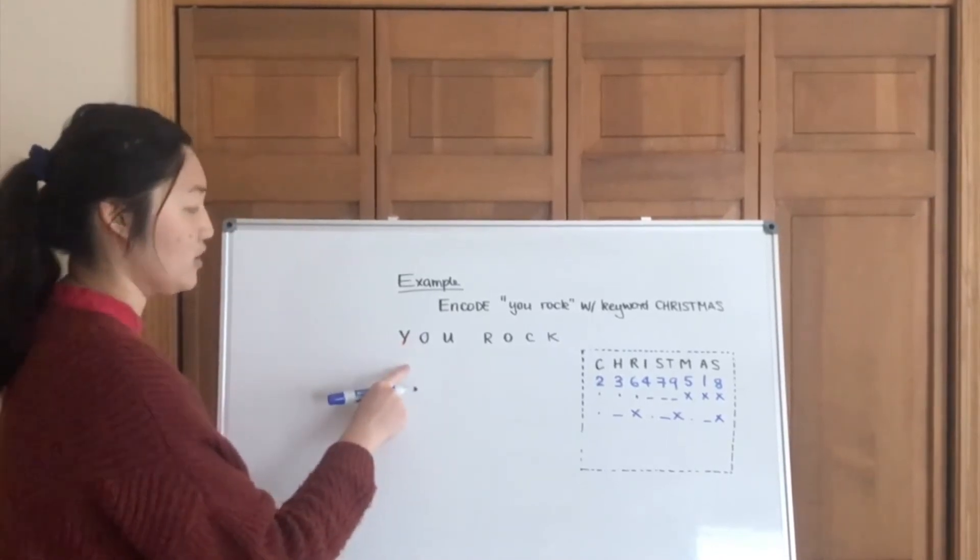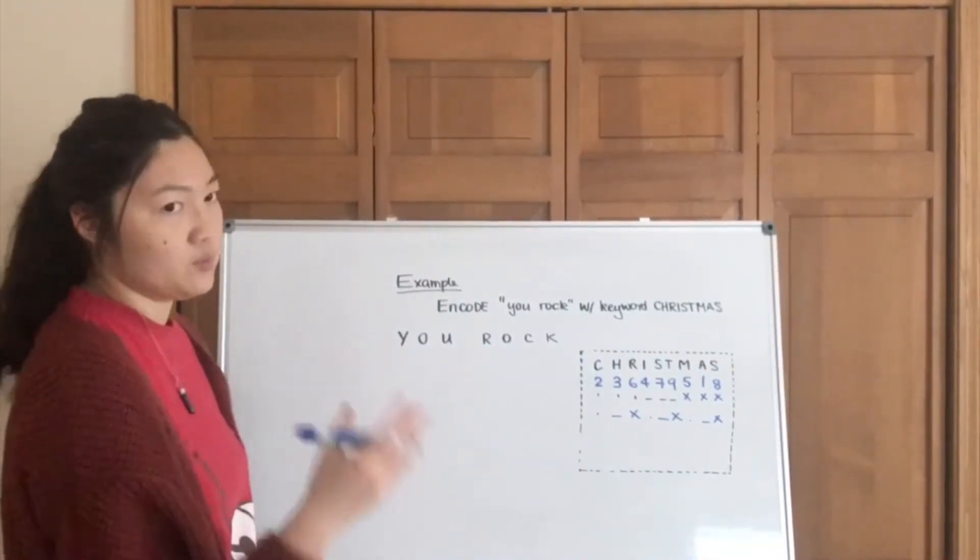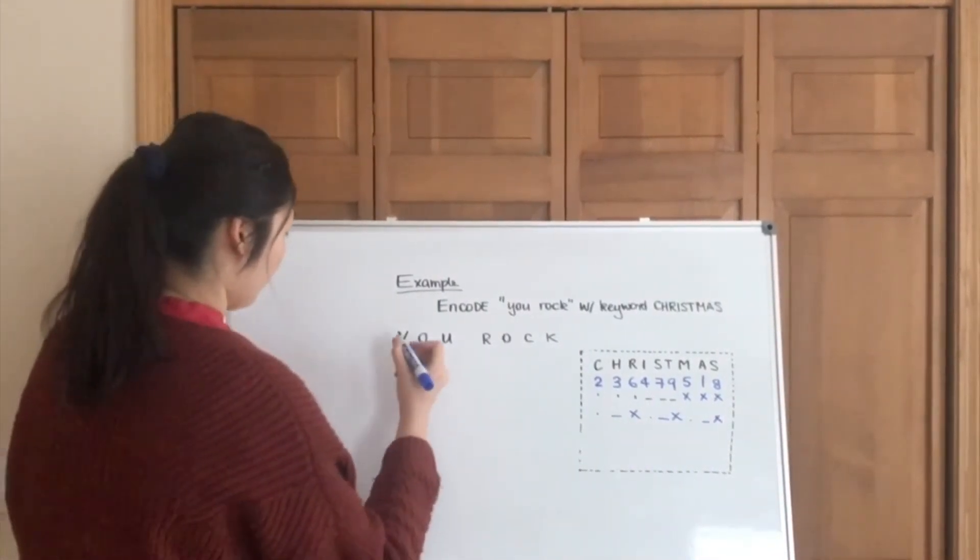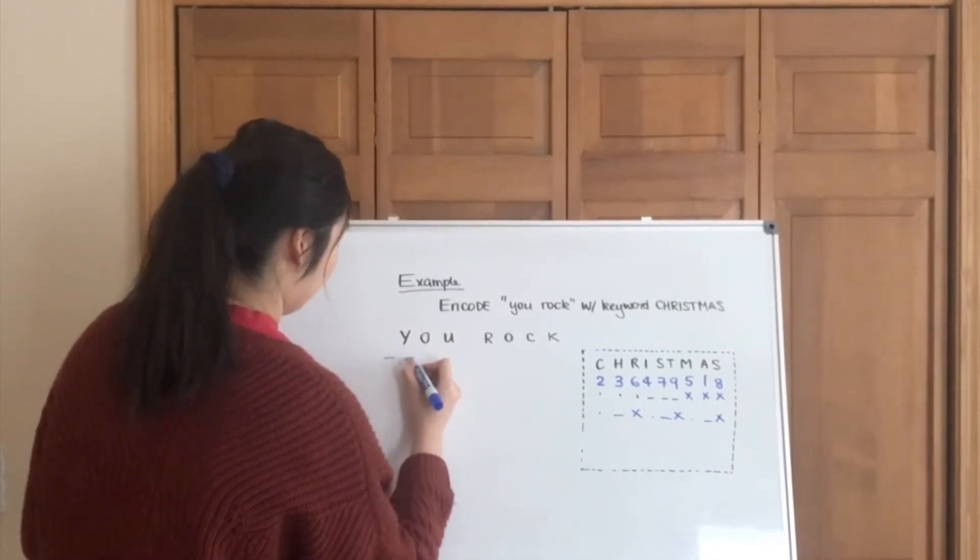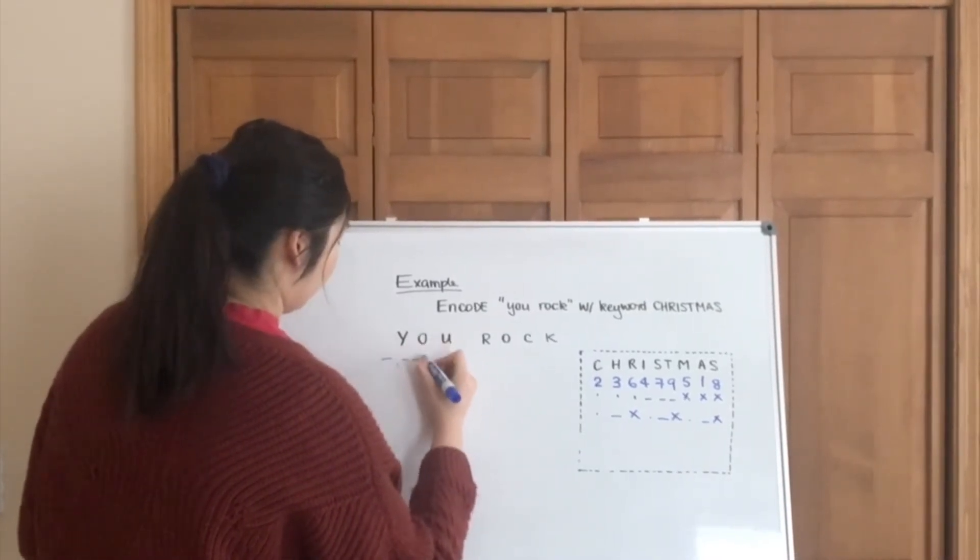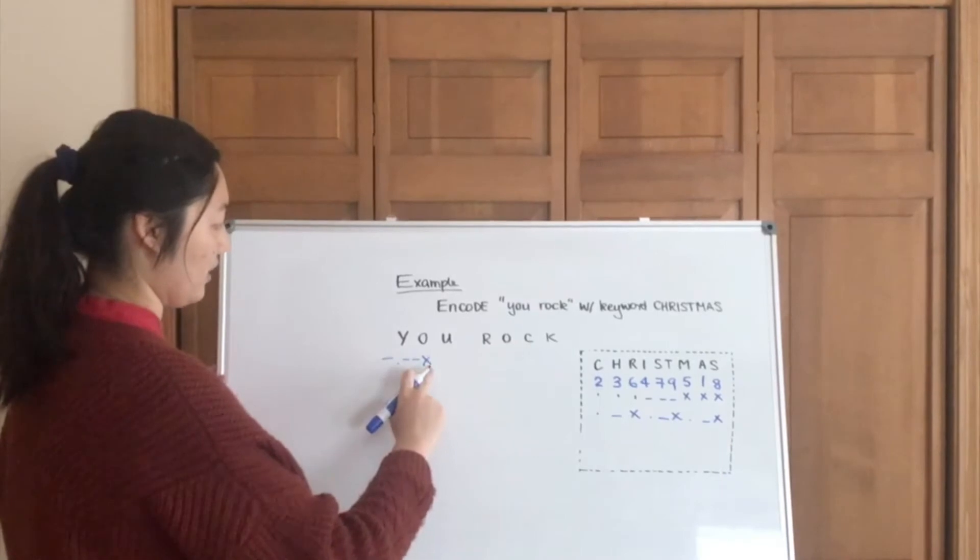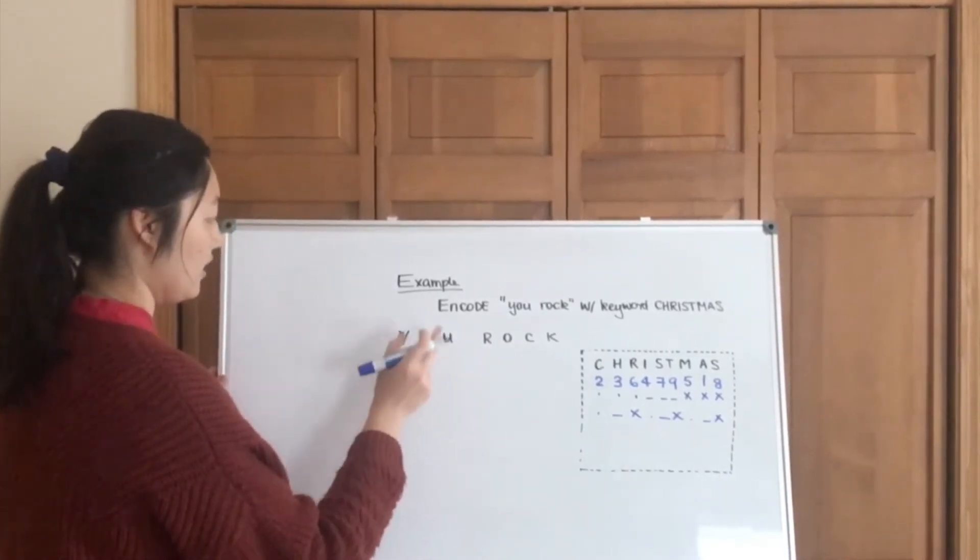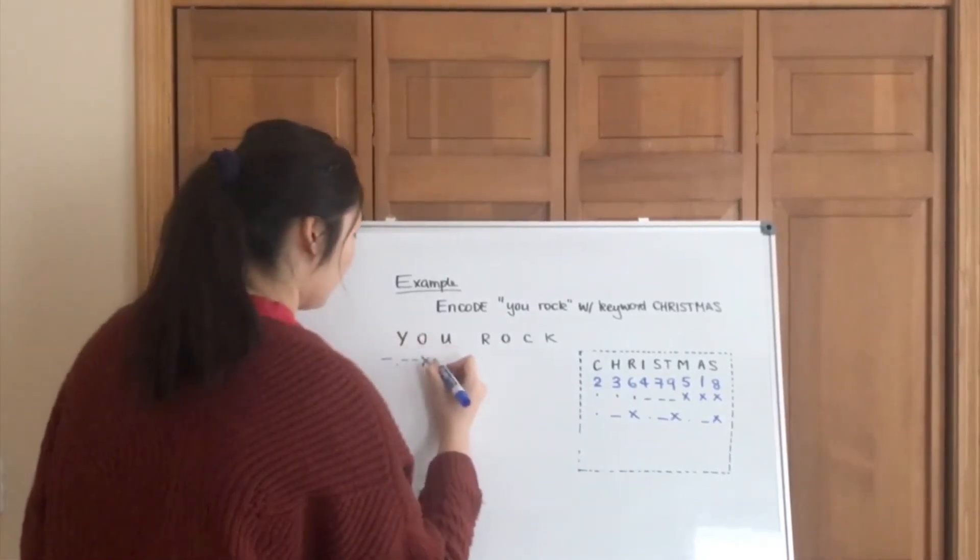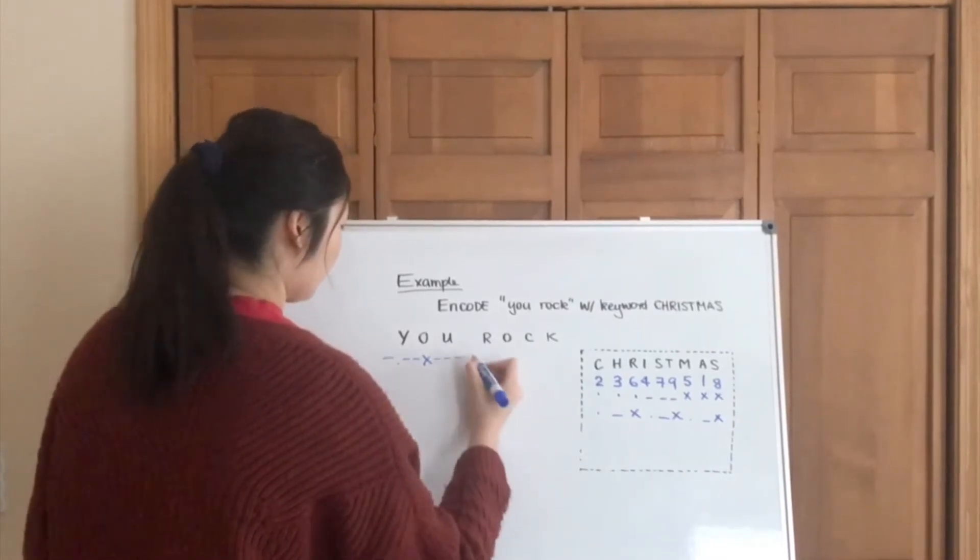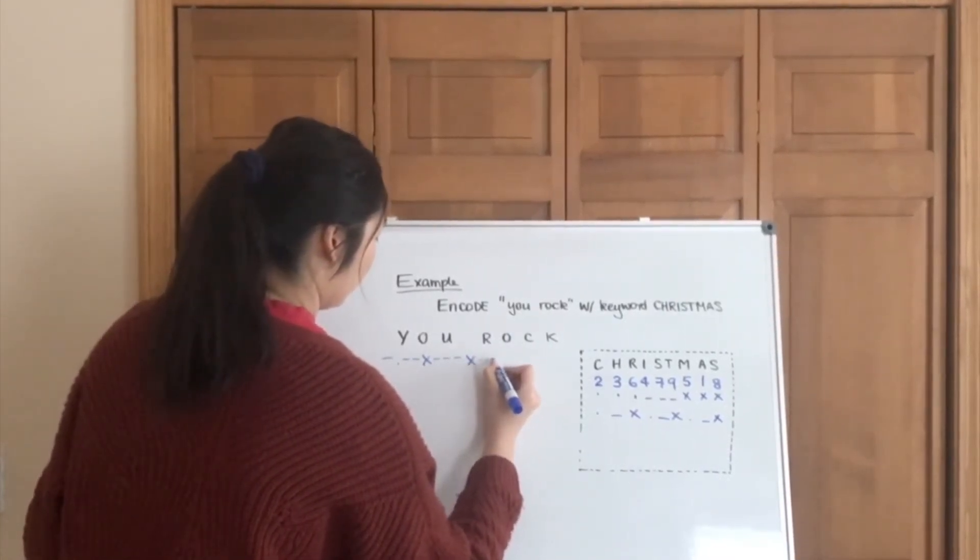Next step, we're going to transfer YOU ROCK into Morse code. So Y dash, notice that I put an X here to note that this is the end of the letter Y, and we're going to start O. O, another X, and then U.